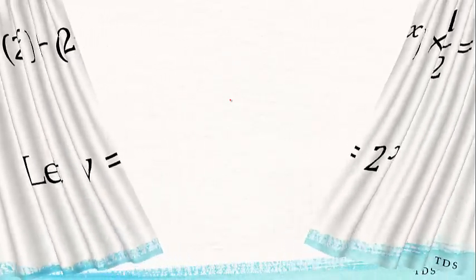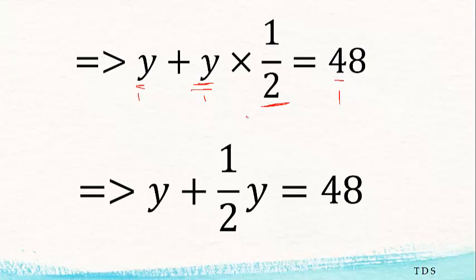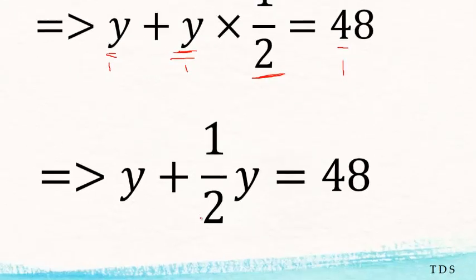We'll solve for y and then go back and replace y with what it represents. We have y plus y times one-half equals 48. And y times one-half is y over 2.